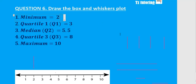We put another vertical line at 3, another vertical line at 3 and that is our Q1.